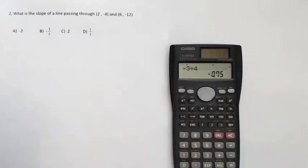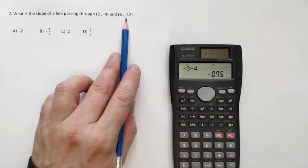Hey, we're looking at slope number two. What is the slope of a line passing through 2, negative 4 and 6, negative 12?